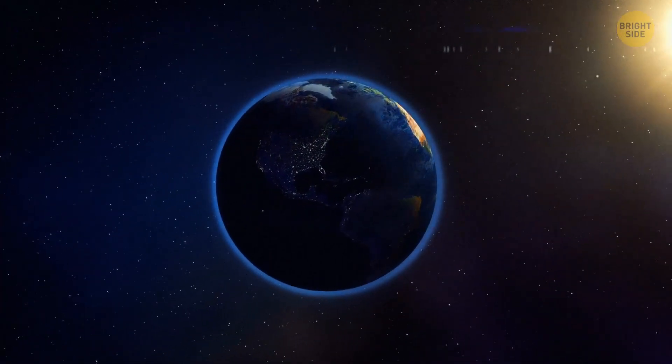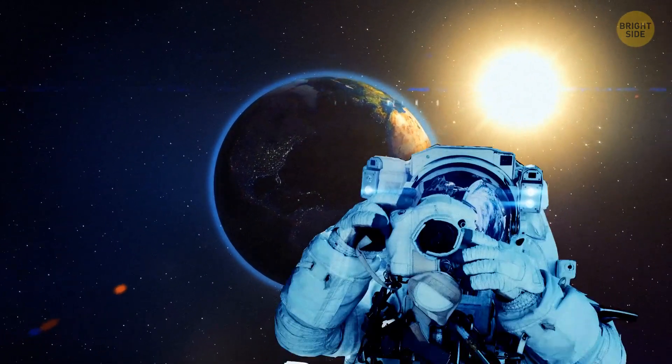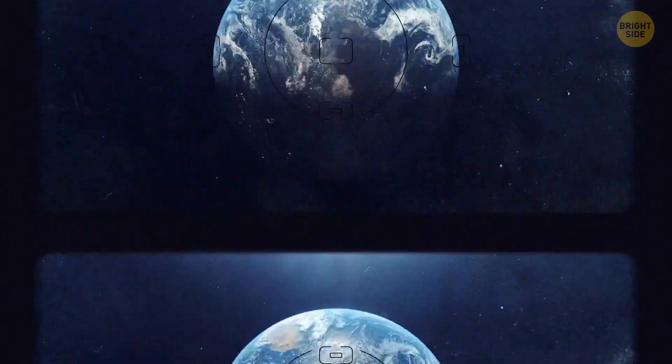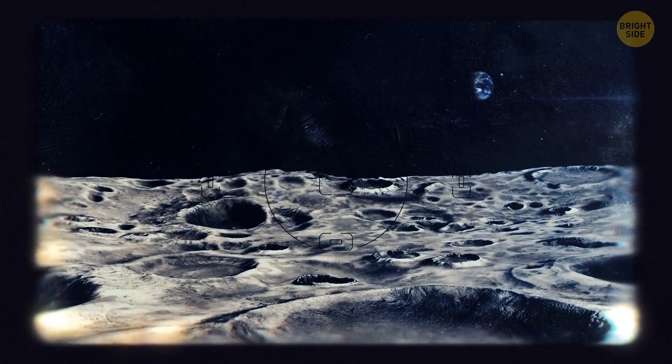And since it's just as bright up there in space, the process is the same when you take pictures of sunlit objects there. Using short exposure, you can get good, bright pictures of Earth or the surface of the Moon. But it also means there will be no stars in the picture.